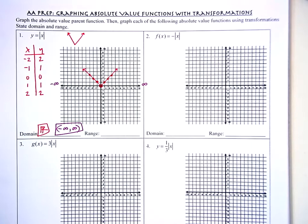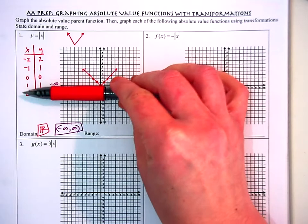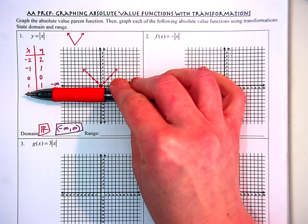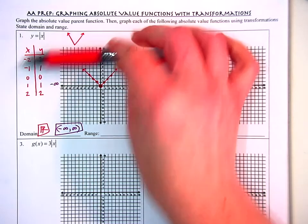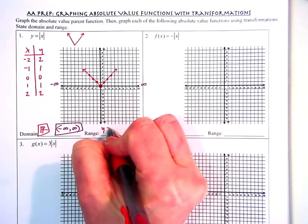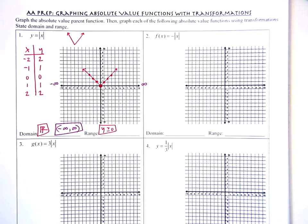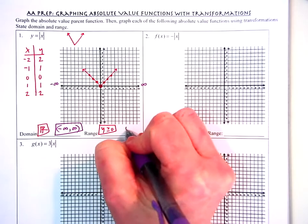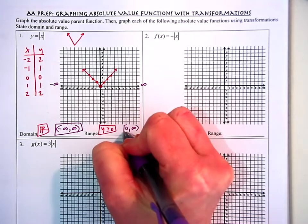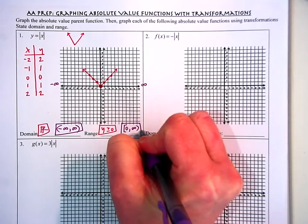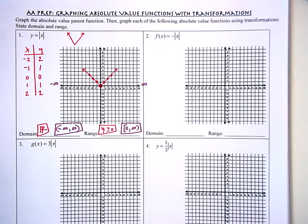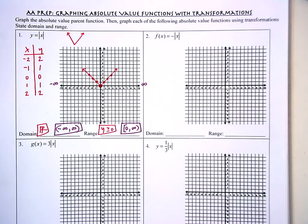For the range, we're looking at all the values that Y can take. If I trace it from the bottom up, I see that the lowest value that Y can take is zero, or anything more than that. So Y has to be greater than or equal to zero. In interval notation, I can say from zero to infinity — zero takes a hard bracket because it can be equal to zero, and infinity takes a parenthesis.